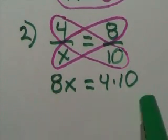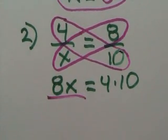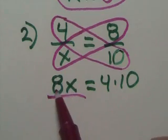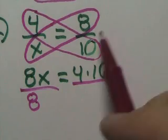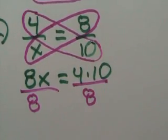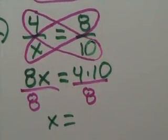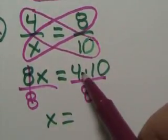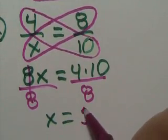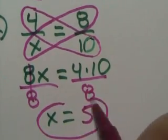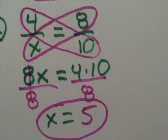Now some of this you can do in your head, and that's fine. But I'm going to go ahead and go through the normal routine. So I want x by itself, so I'm going to have to divide by 8. Of course, you have to do that to both sides. And that leaves us with x equals. That's gone. And let's see, this is 40. 40 divided by 8 is 5. So x is 5. Right? Because look, 8 times 5 is 40. 4 times 10 is 40. That works.